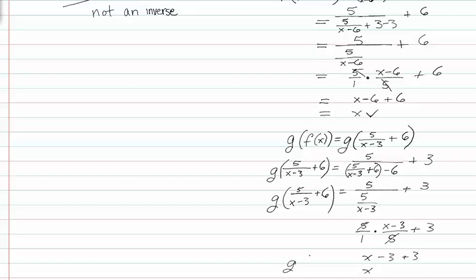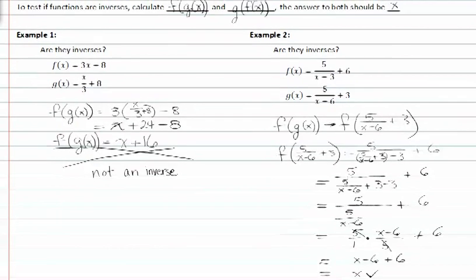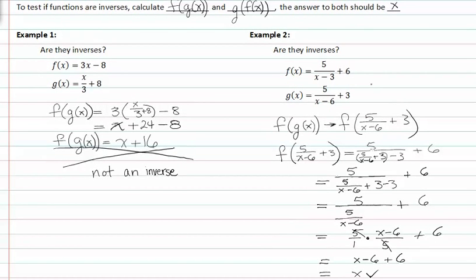So g(f(x)) is also equal to x. So they both come out as x, so that means the two original given functions are inverses of each other.